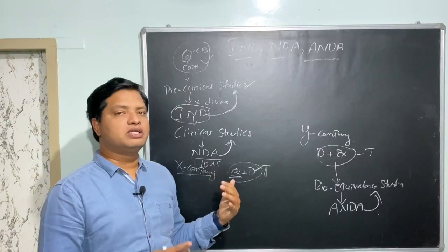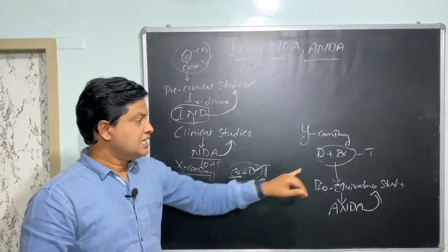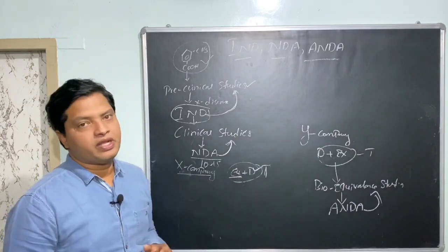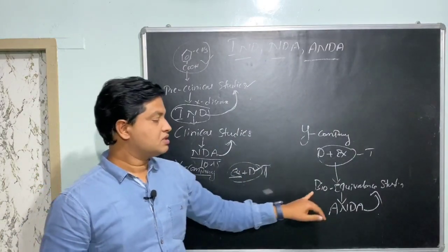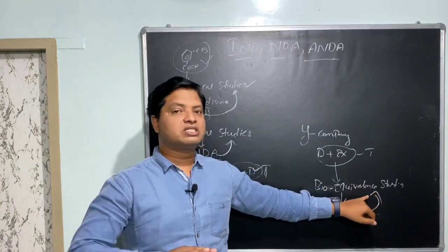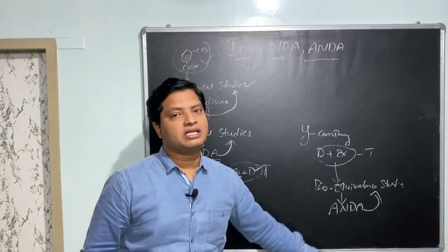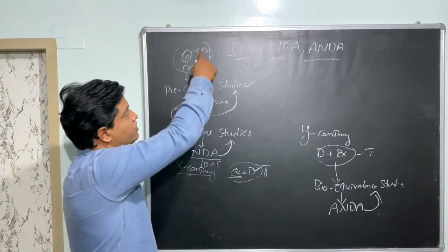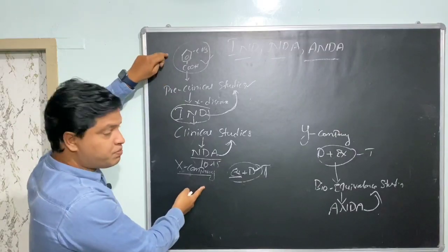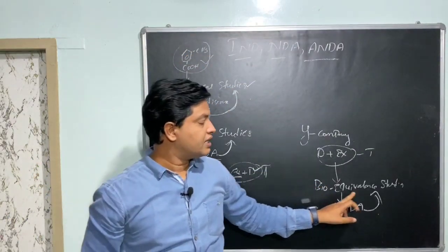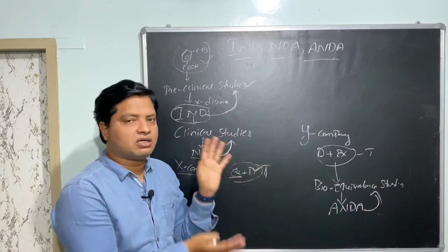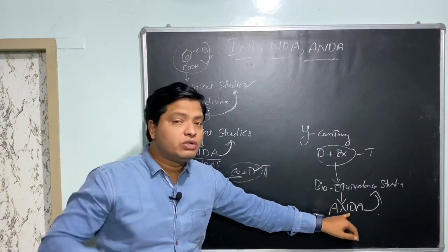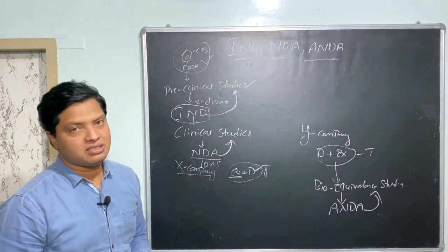Bioequivalent means the bioavailability should be 80 to 85 percent equal to the innovator product. Then only you can sell the drug into the market. Once you conduct the bioequivalence studies, to sell that generic drug into the market, you need to fill an application called Abbreviated New Drug Application. Why is it called abbreviated? Abbreviated means cut short — you are cutting short all the processes, conducting only bioequivalence studies instead of the full process. Hence the application name is Abbreviated New Drug Application, and the information you need to provide is the bioequivalence studies information.